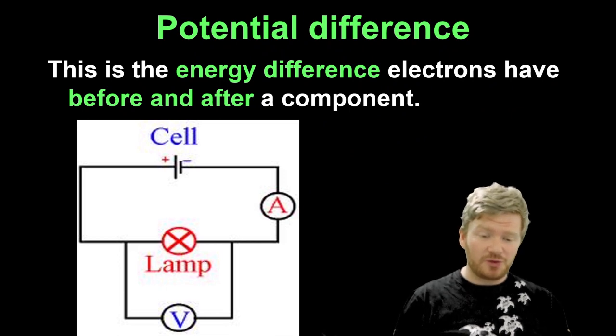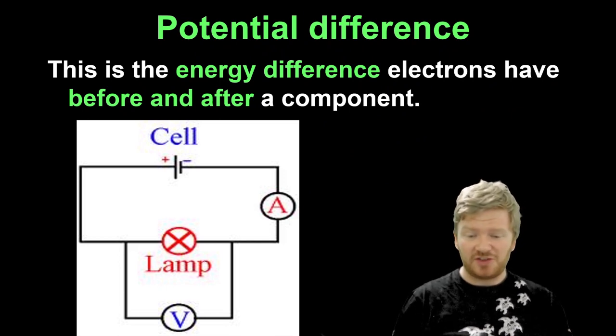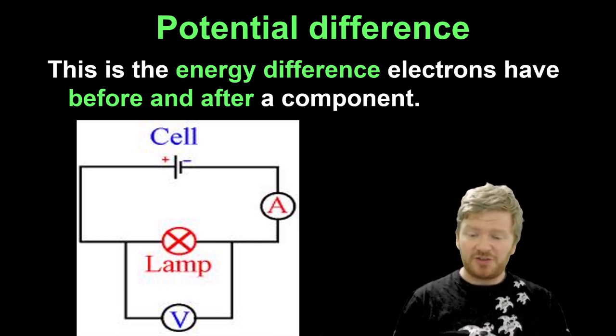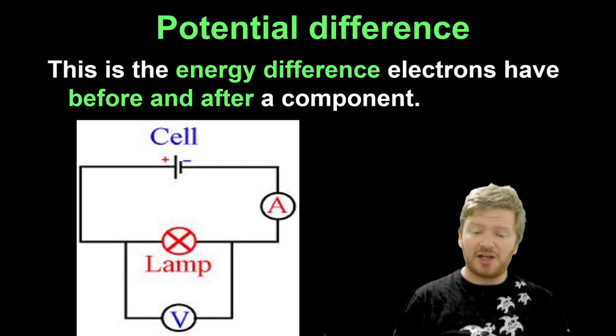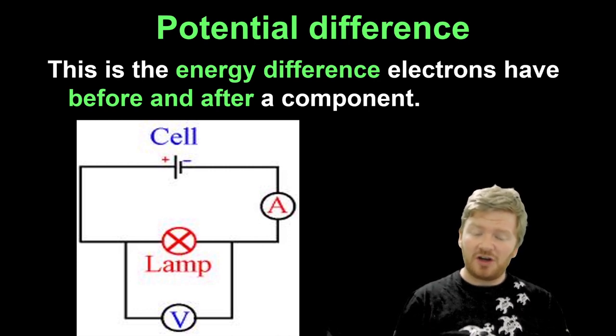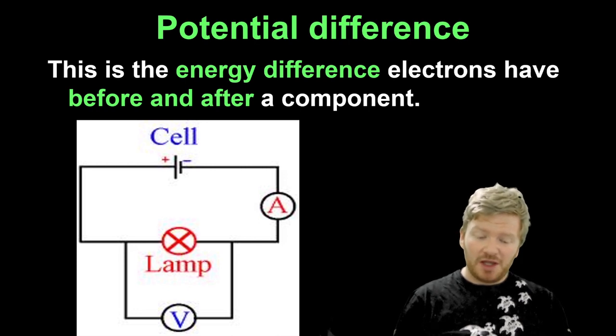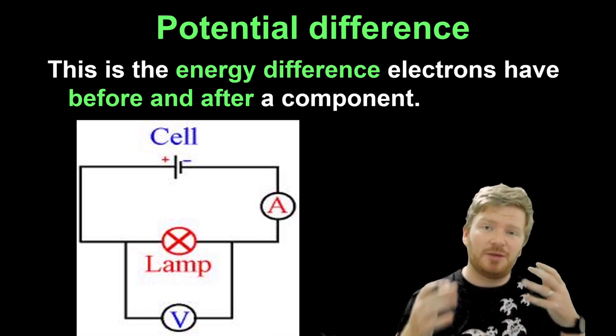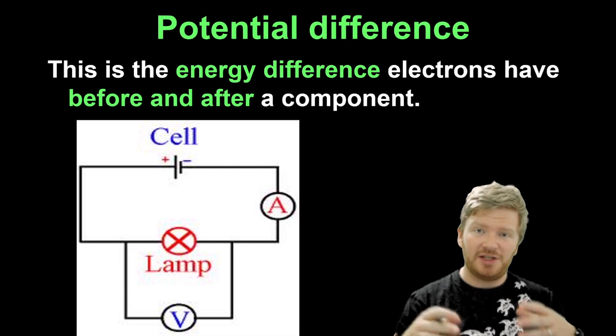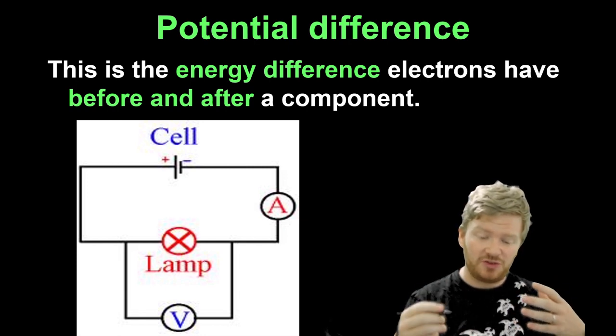So then again, we're still talking here about IGCSE physics, potential difference. So potential difference is the energy difference that electrons have before and after a component. And when you remember it that way, it suddenly becomes really easy to understand why we hook up measuring devices the way that we do.